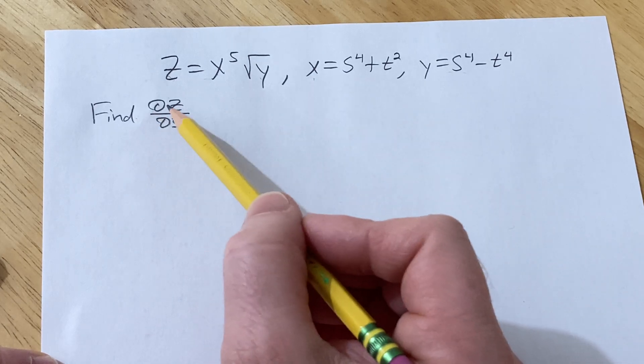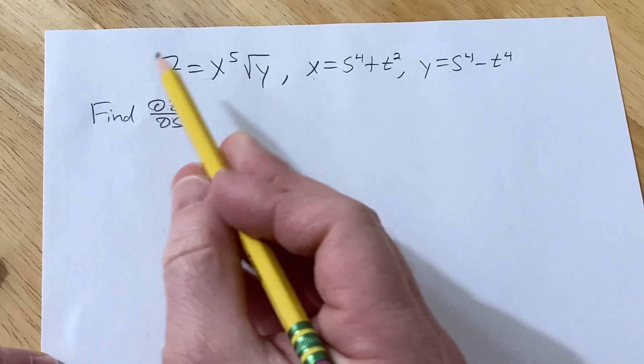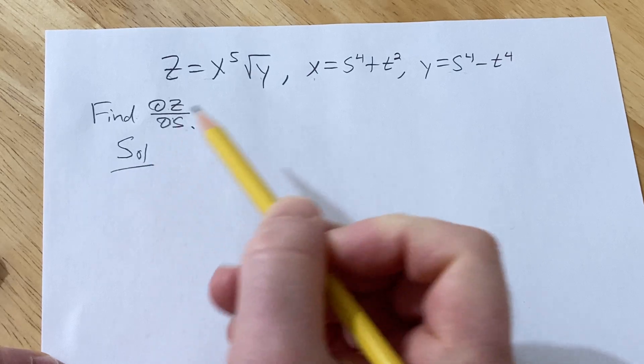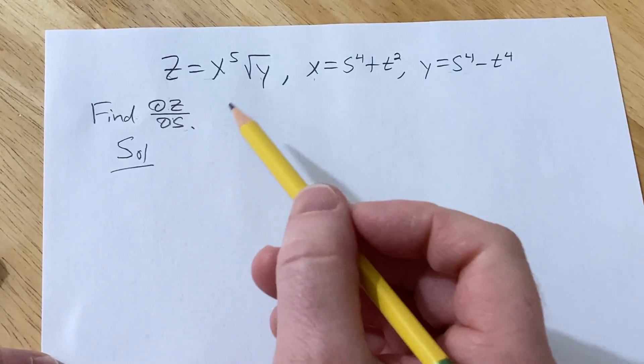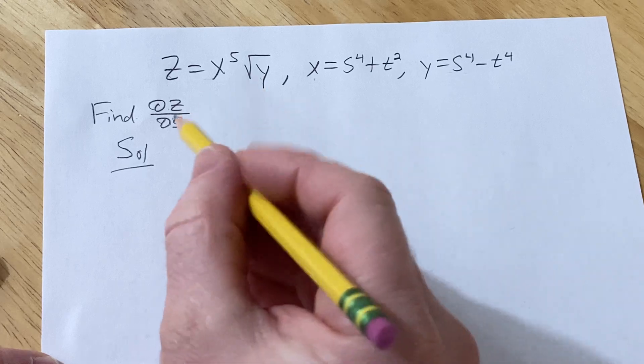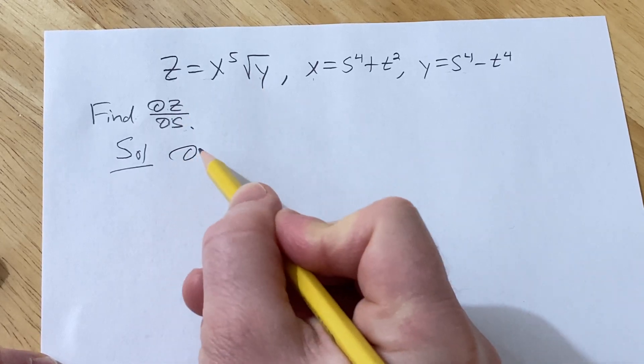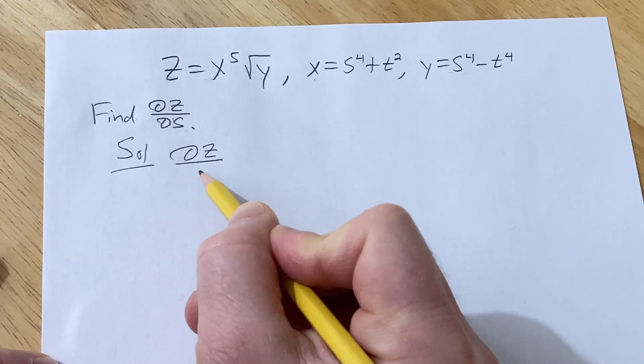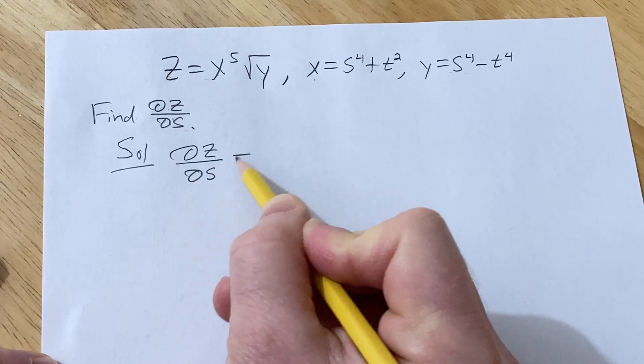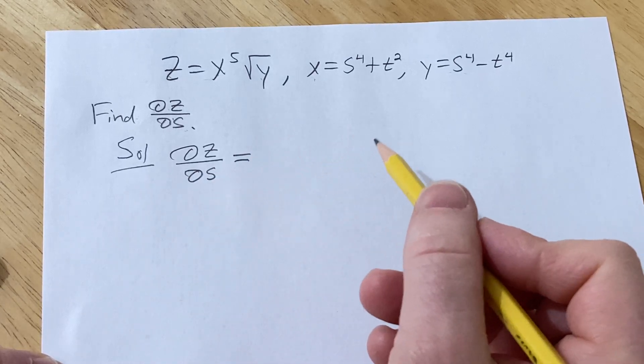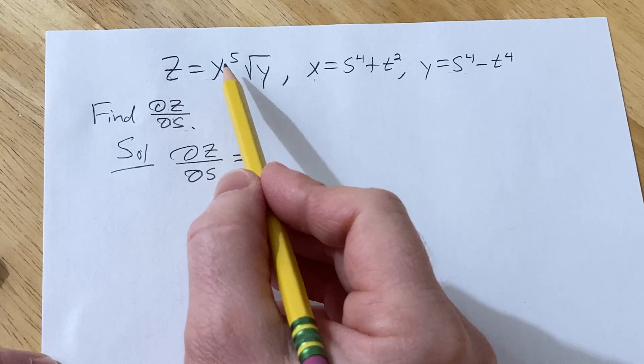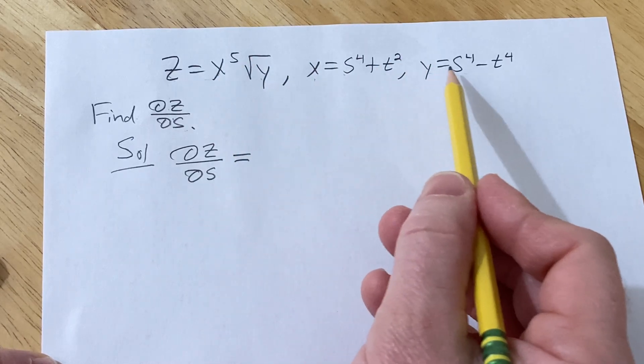We have to find the partial of z with respect to s. So to do this we're going to use the chain rule for functions of more than one variable. We want to find the partial of z with respect to s, so we have to think about how can we get to s. To get to s we can go through x or we can go through y.